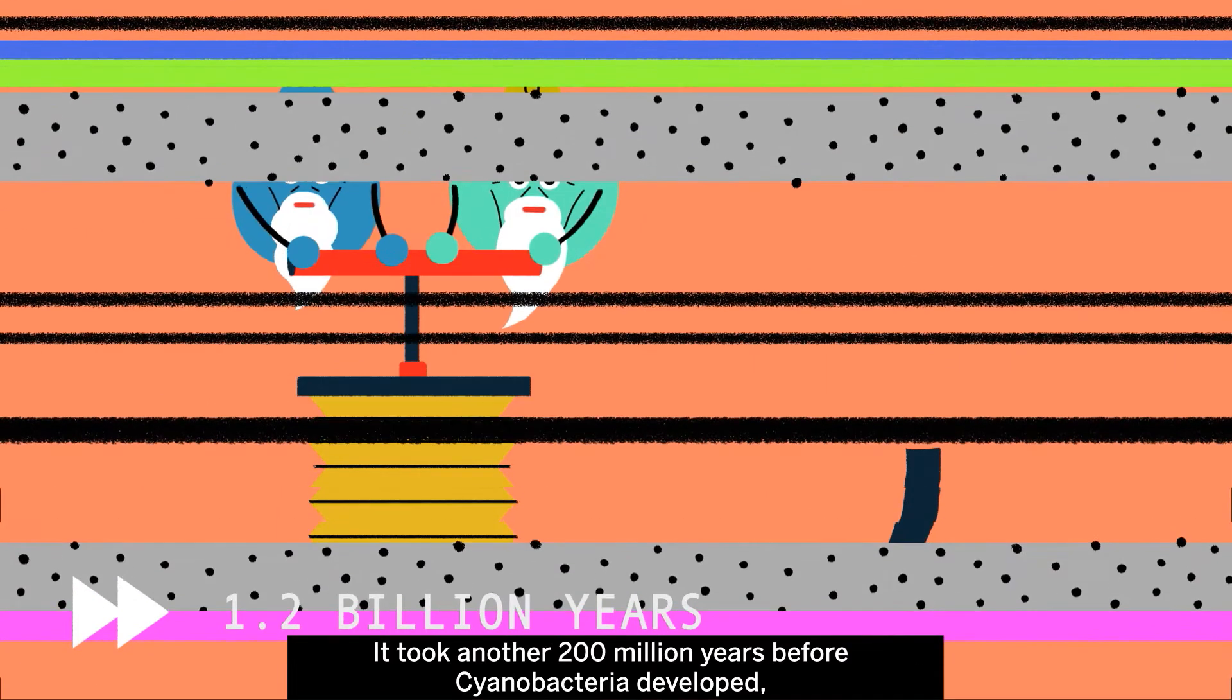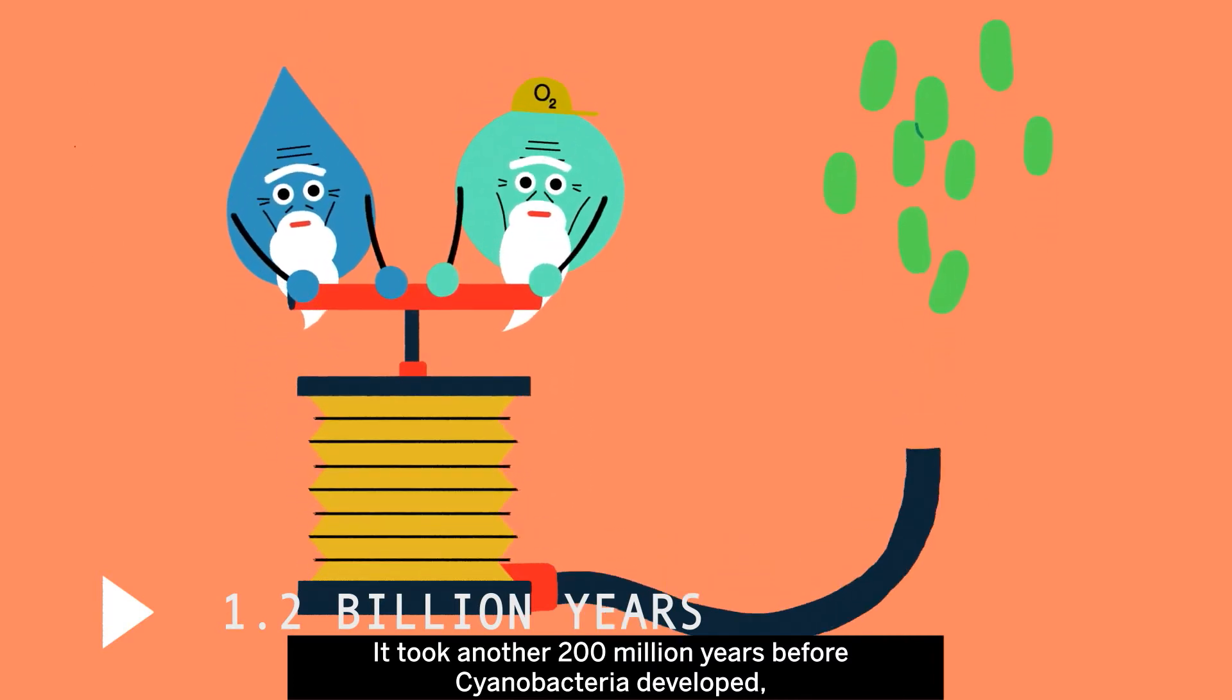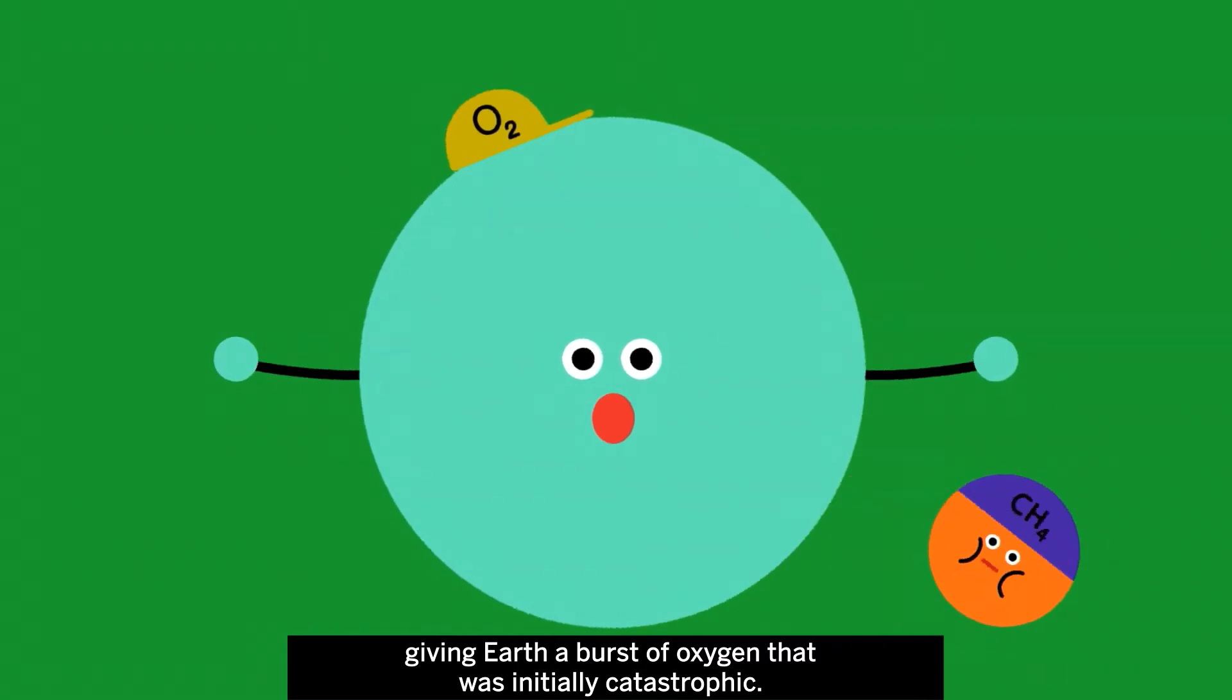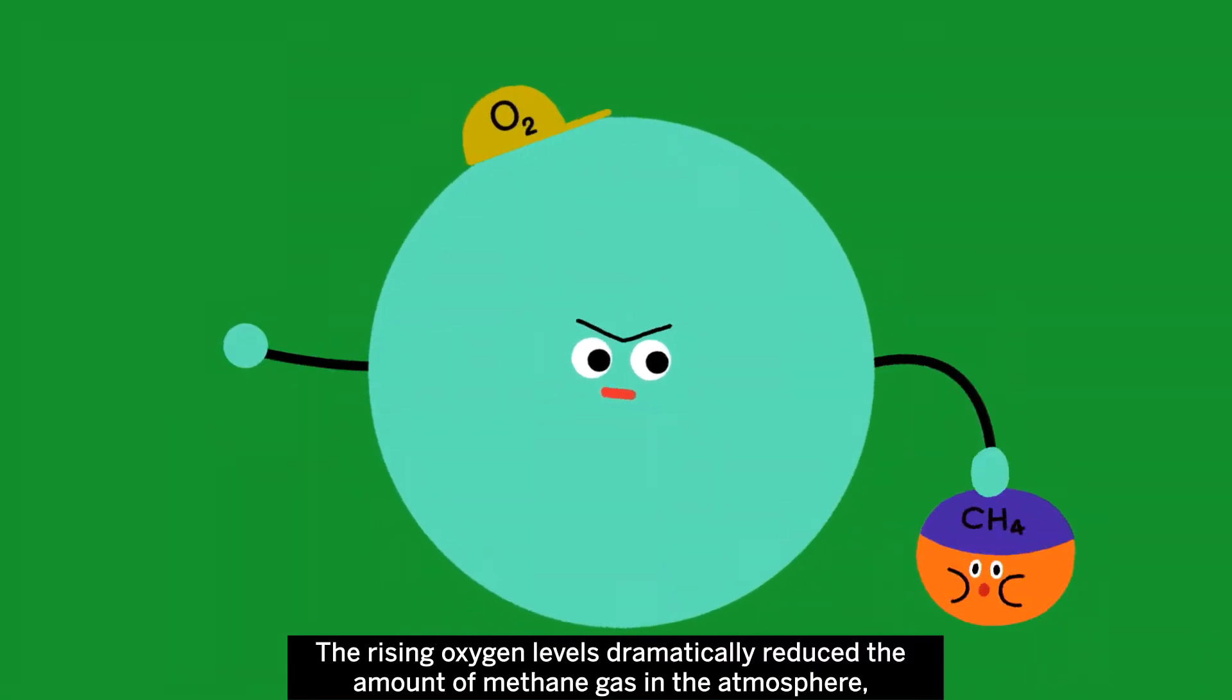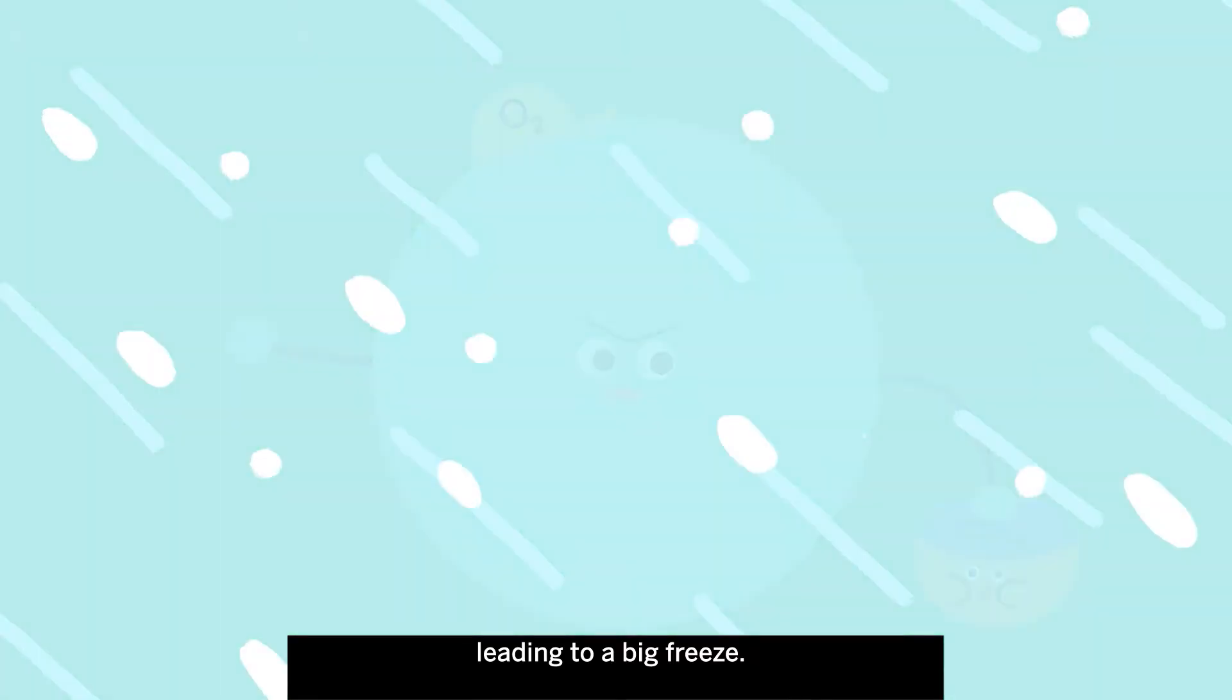It took another 200 million years before cyanobacteria developed, giving Earth a burst of oxygen that was initially catastrophic. The rising oxygen levels dramatically reduced the amount of methane gas in the atmosphere, leading to a big freeze.